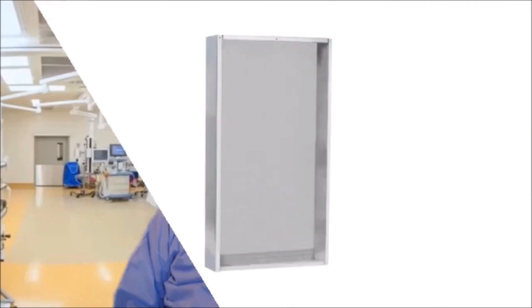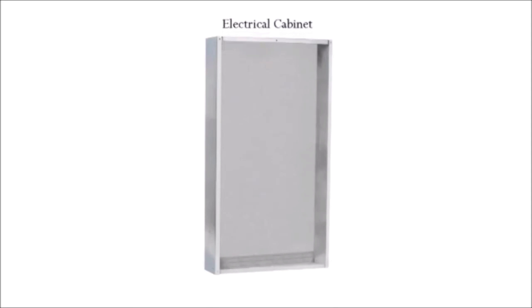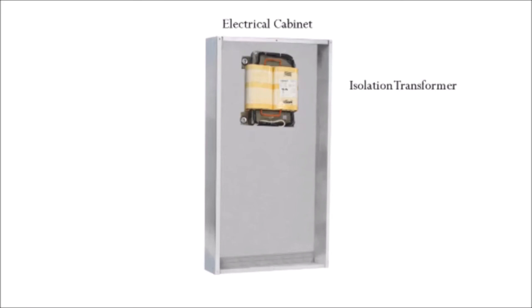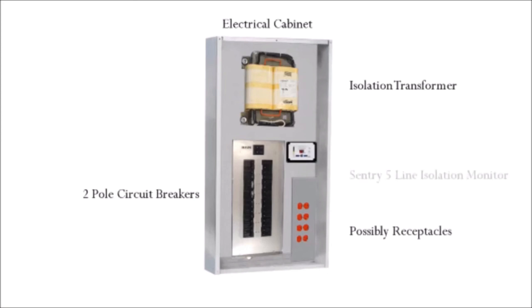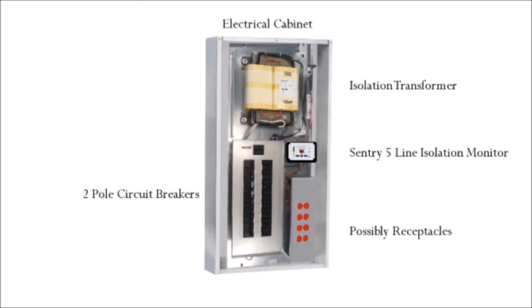Let's look at the components of the isolated power system. Let's build an isolation power panel. First, we need an approved electrical cabinet. The isolated transformer has primary windings and secondary windings. Now we'll add dual circuit breakers to distribute the power. Perhaps we'll add some hospital grade receptacles. And of course, we need the Sentry 5 line isolation monitor to let us know when the leakage to earth ground has exceeded its set point. Now that the components are installed, let's wire it up. We'll finish our isolation power panel by installing the cover.